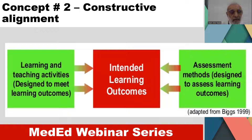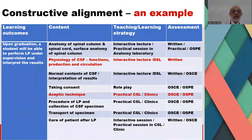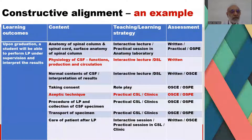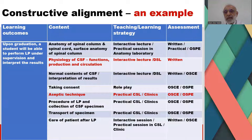Learning and teaching activities are designed to meet the intended learning outcomes, whereas assessment methods are designed to assess the intended learning outcomes. Here is an example of constructive alignment. The learning outcome: upon graduation, a student will be able to perform lumbar puncture under supervision and interpret the results. Based on this learning outcome, the content is identified, teaching-learning strategies are decided, and assessment methods are chosen.